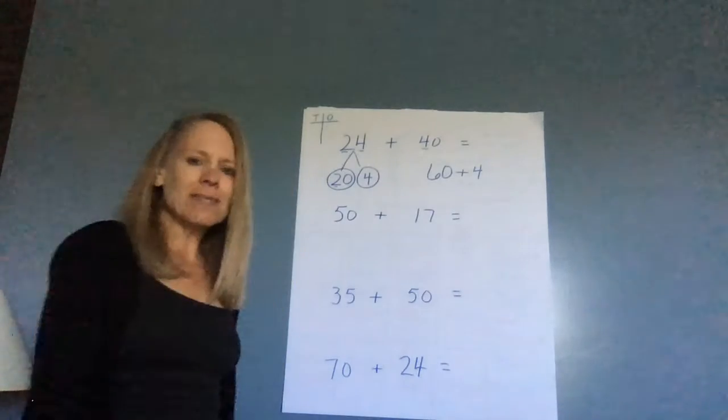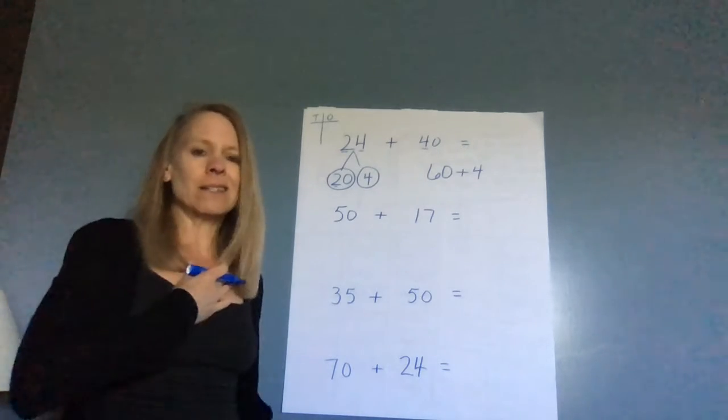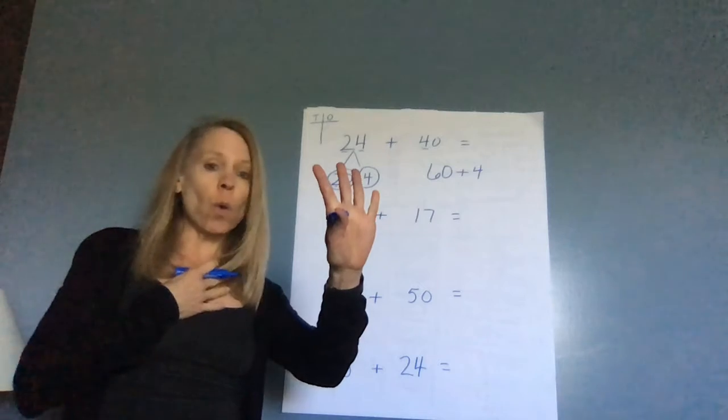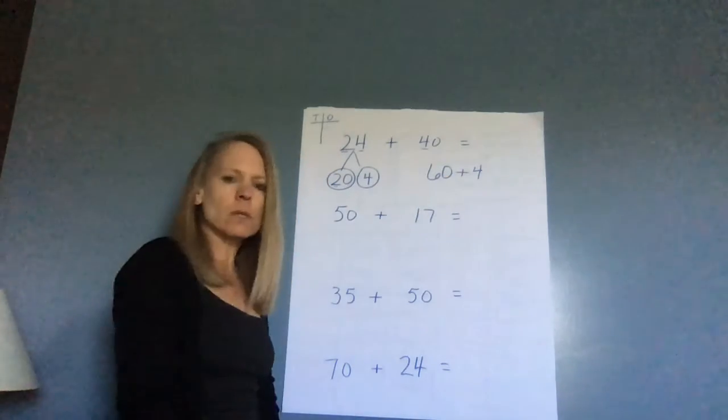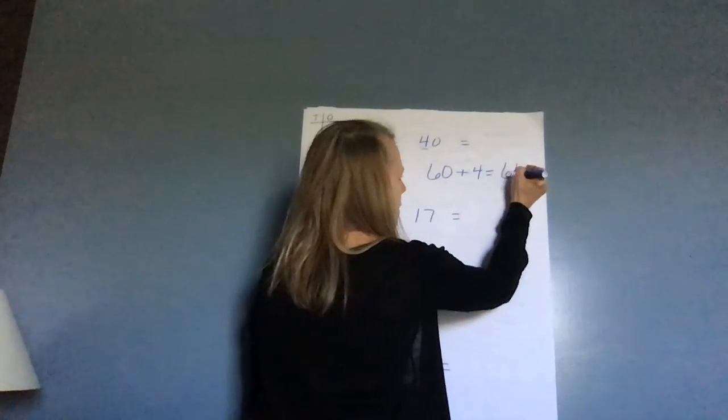Then I don't have any ones over here, so all I have to do is add my four. So if I have 60 plus four more, I can say 60, 61, 62, 63, 64. Or I know that this four is just going to go in that zero's spot. So my answer is 64.